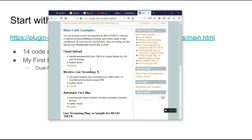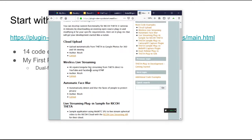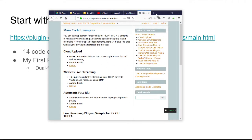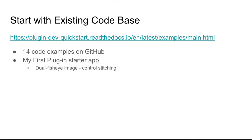There are links to other documentation as well. If you don't know where to start, you can start with 'My First Plugin,' which shows you how to do control stitching and produce dual fisheye images instead of equirectangular.